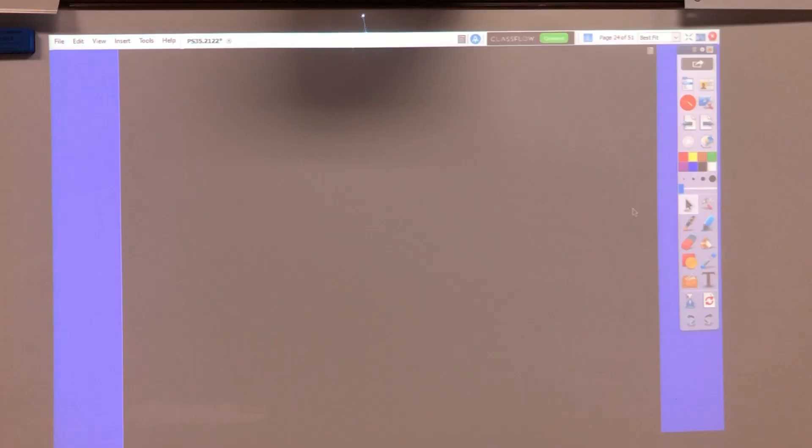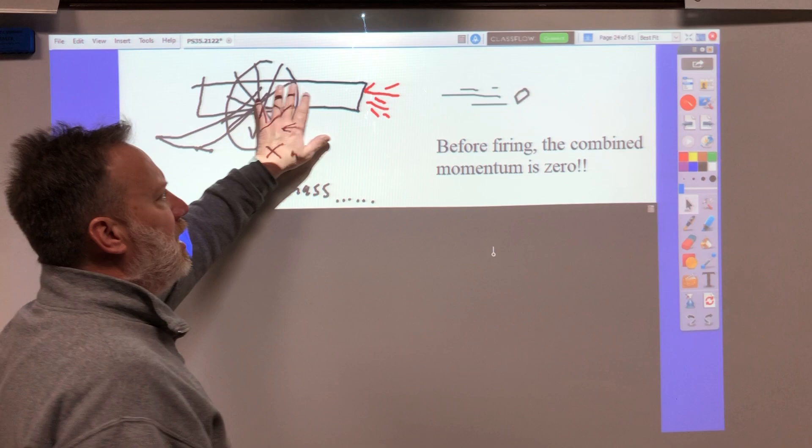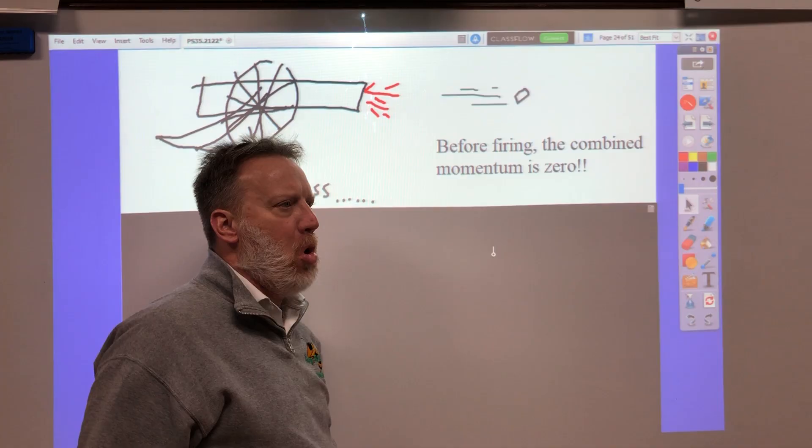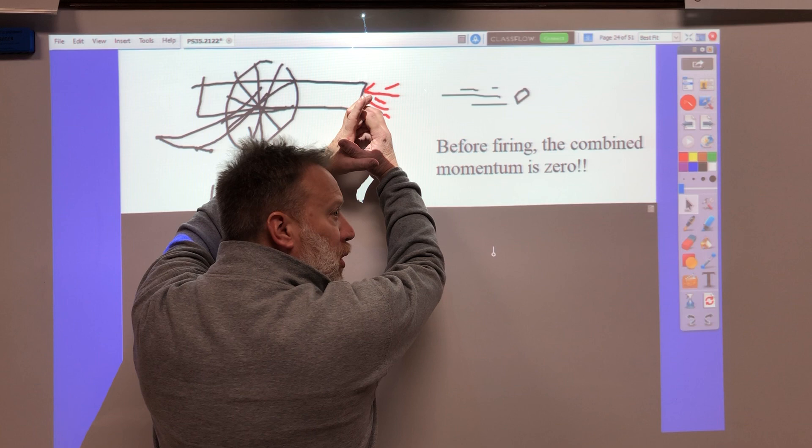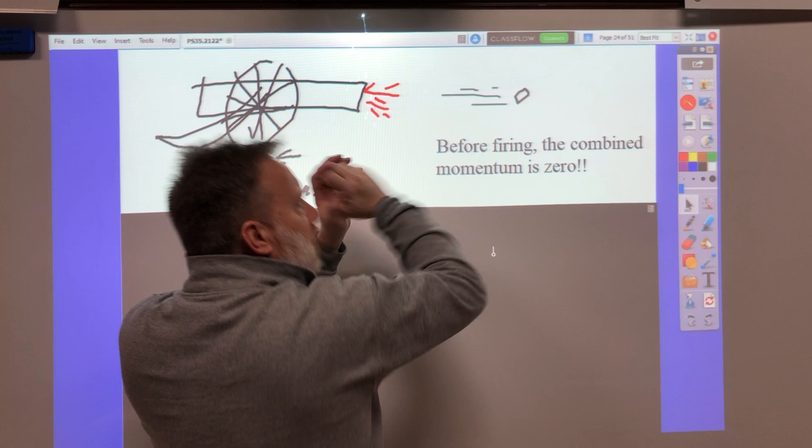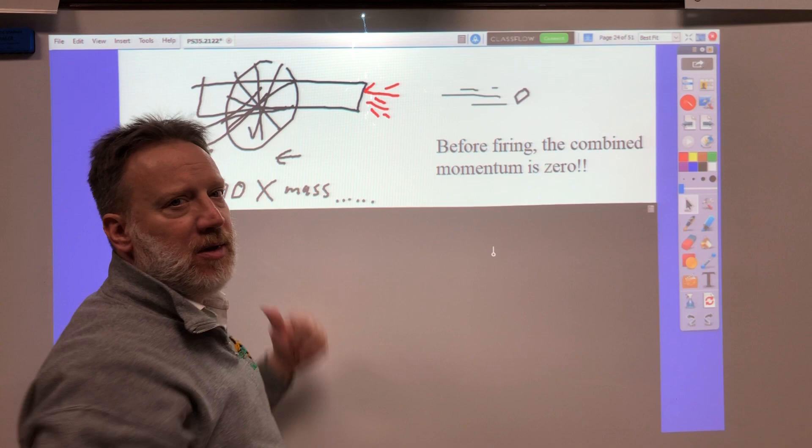Before this is gunshot, actually, let's say the cannon is sitting there. And let's say that cannon is a hundred times more massive than the cannon ball. When everything's sitting there before it goes boom, there's zero momentum. And after the boom, that has a positive momentum, and this has a negative momentum, and they're equal, and they're opposite.